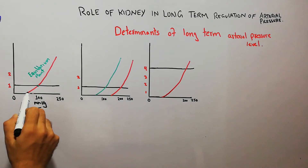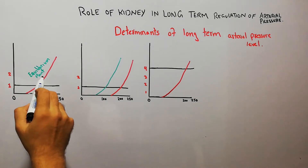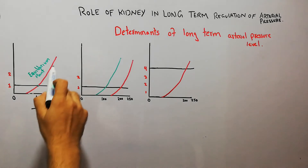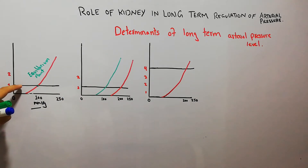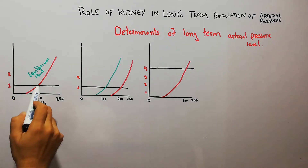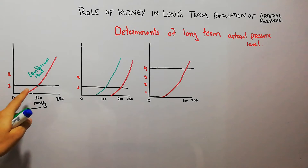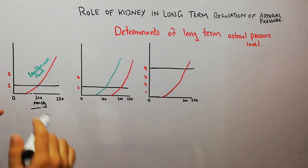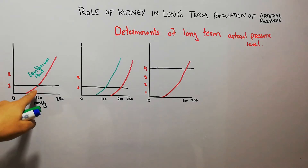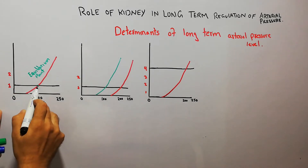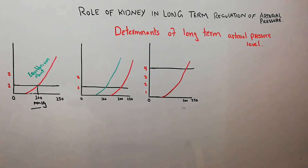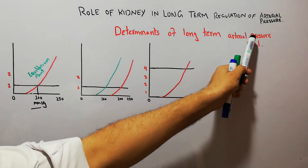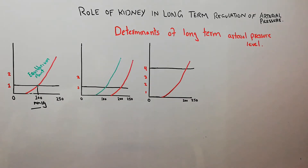In this diagram, the red color graph shows the renal output, the black color graph shows the intake of salt and water, and the green dot shows the equilibrium point where intake and renal output are equal. That equilibrium point is exactly at 100 mmHg, which is the normal arterial pressure level of normal human beings.